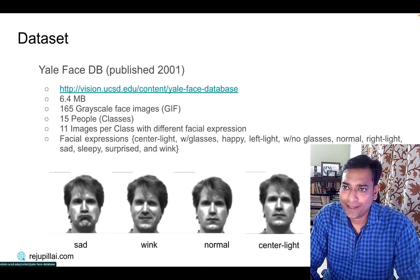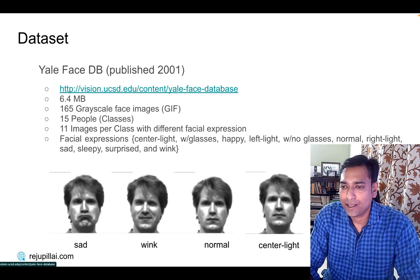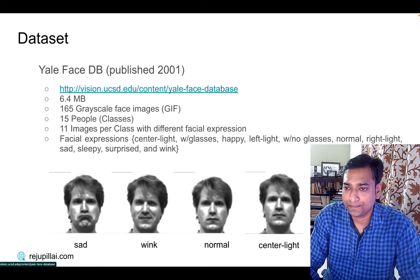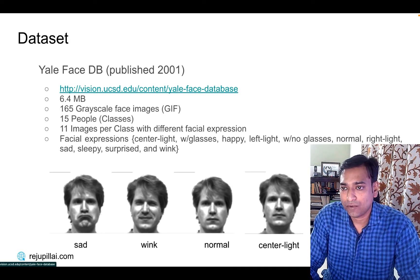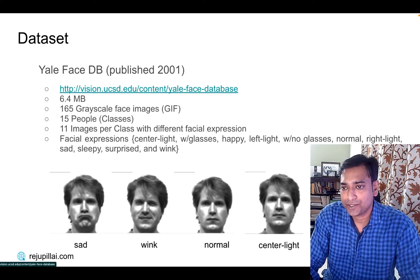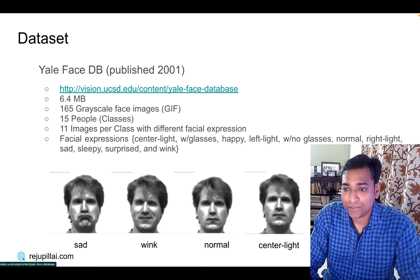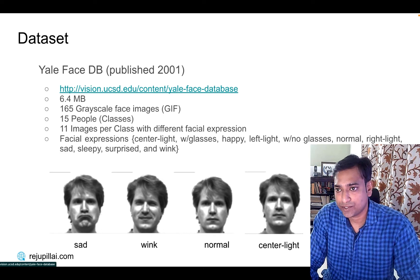Almost two decades back, Yale University published a FACE database, which was very practical because it was small — 6.5 MB. It had 15 different people with 10 to 11 different expressions for each person, constituting a total of 165 grayscale images. An example of that you can see here: sad faces, winking faces, normal and surprised faces.